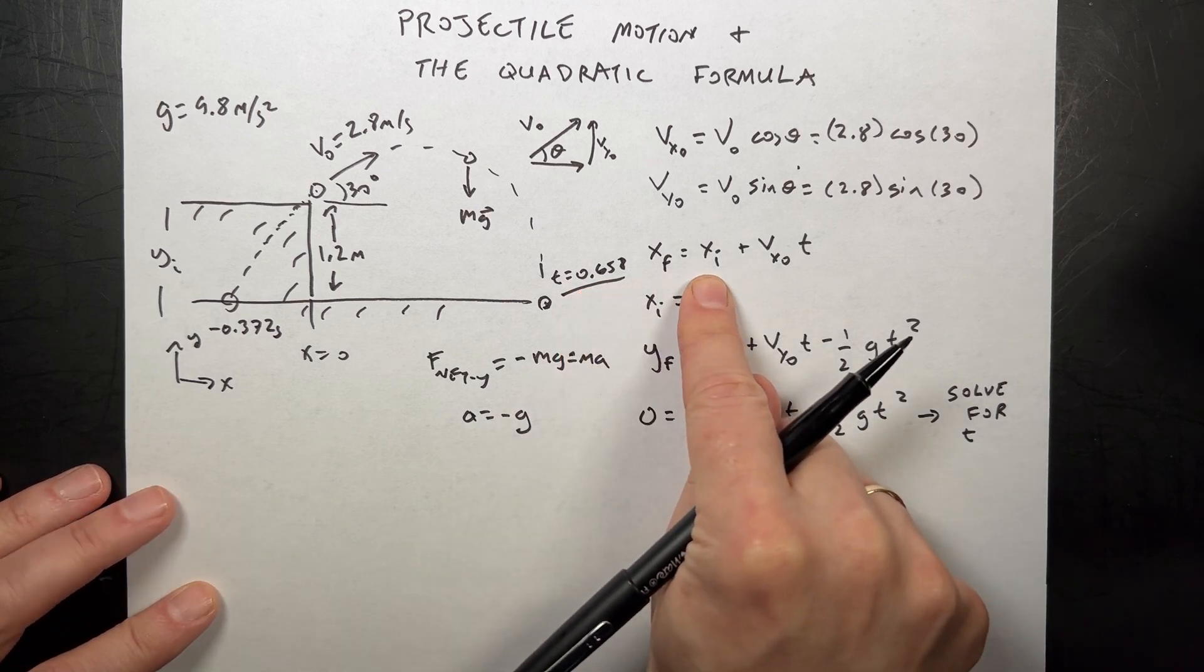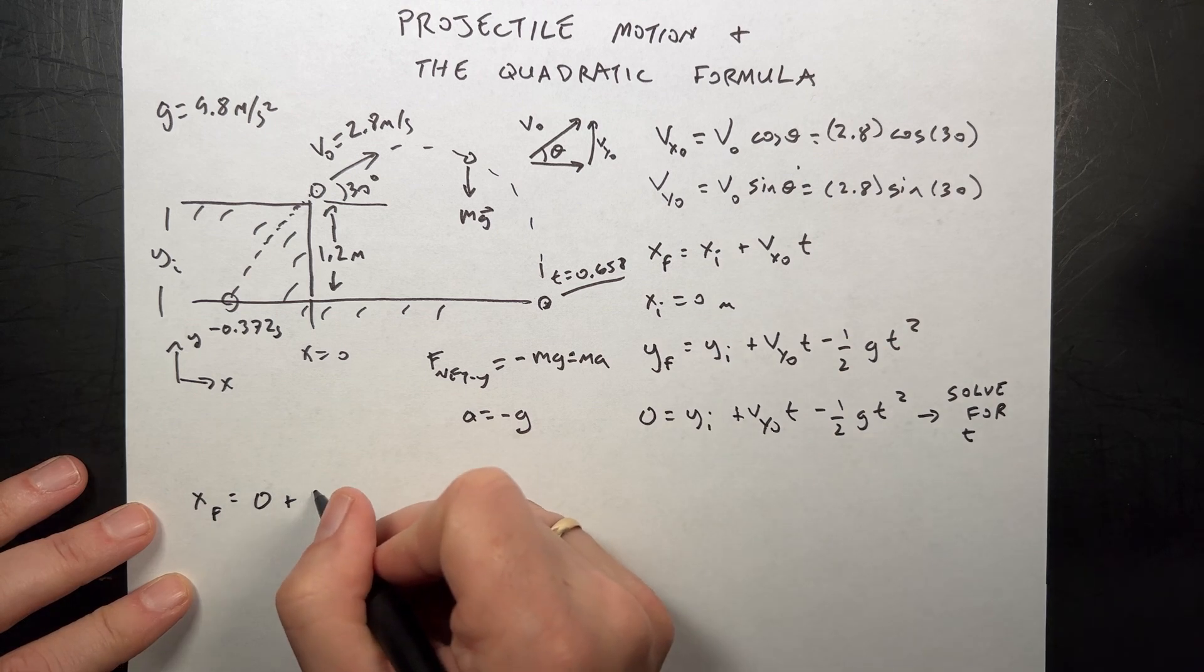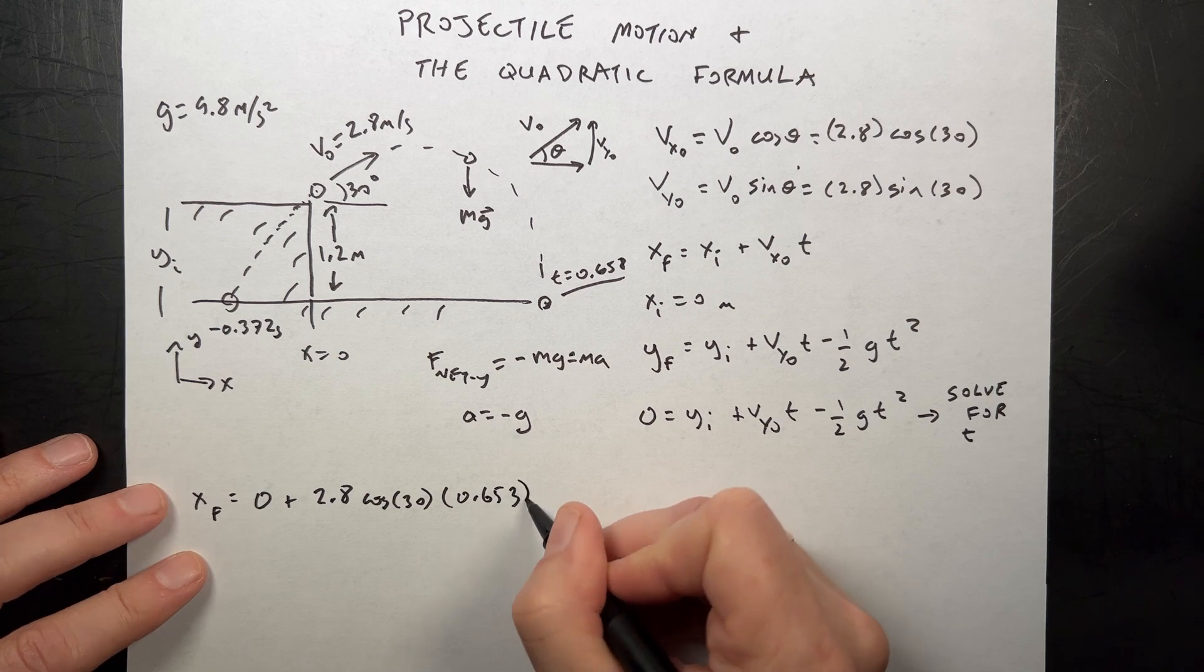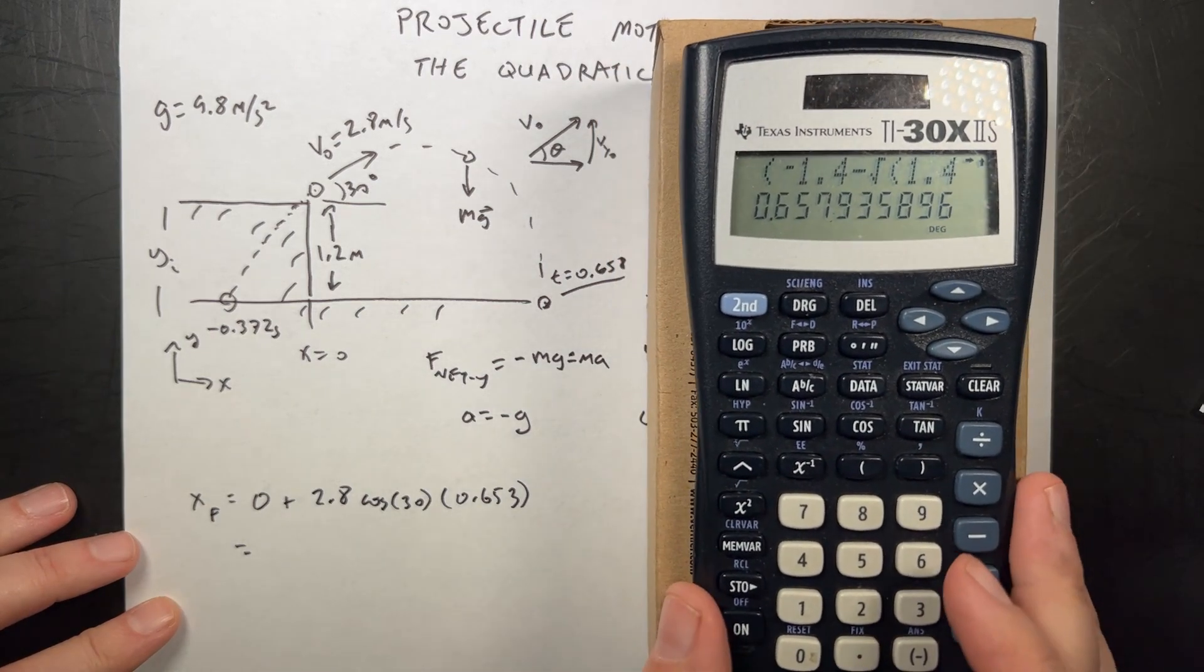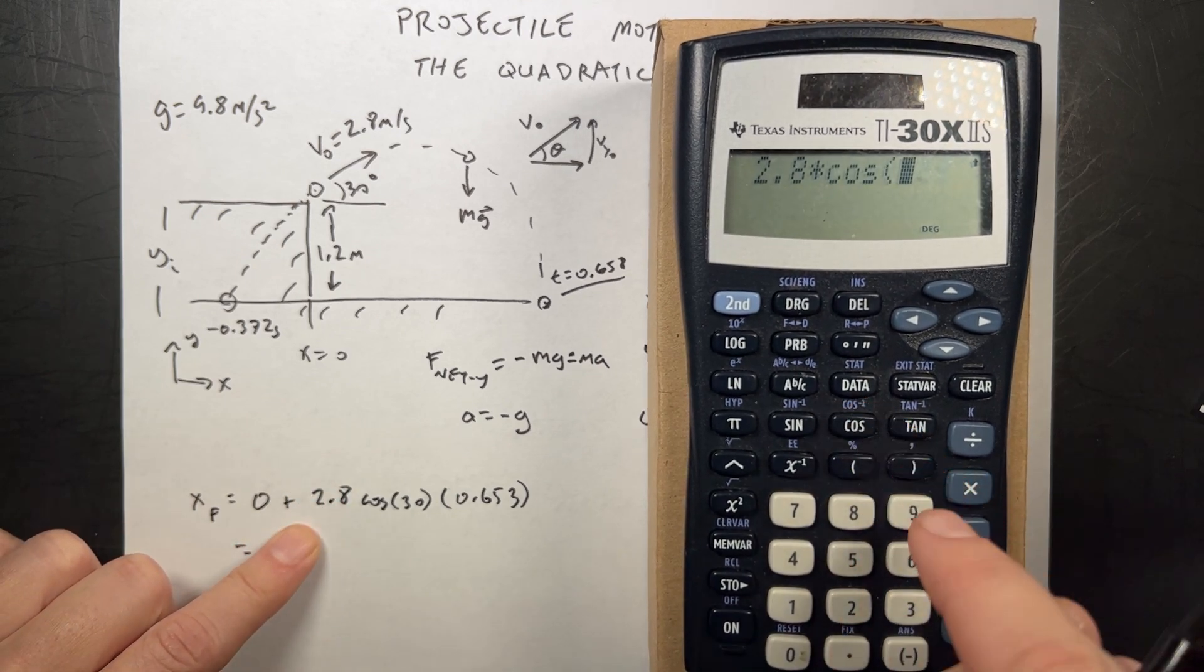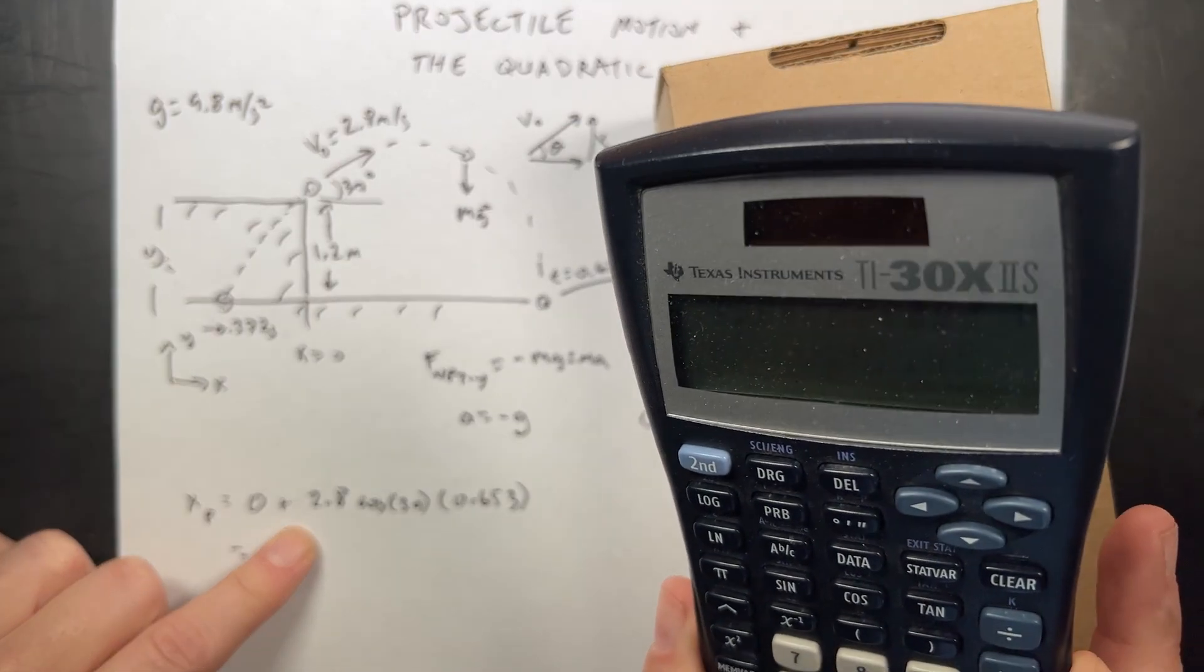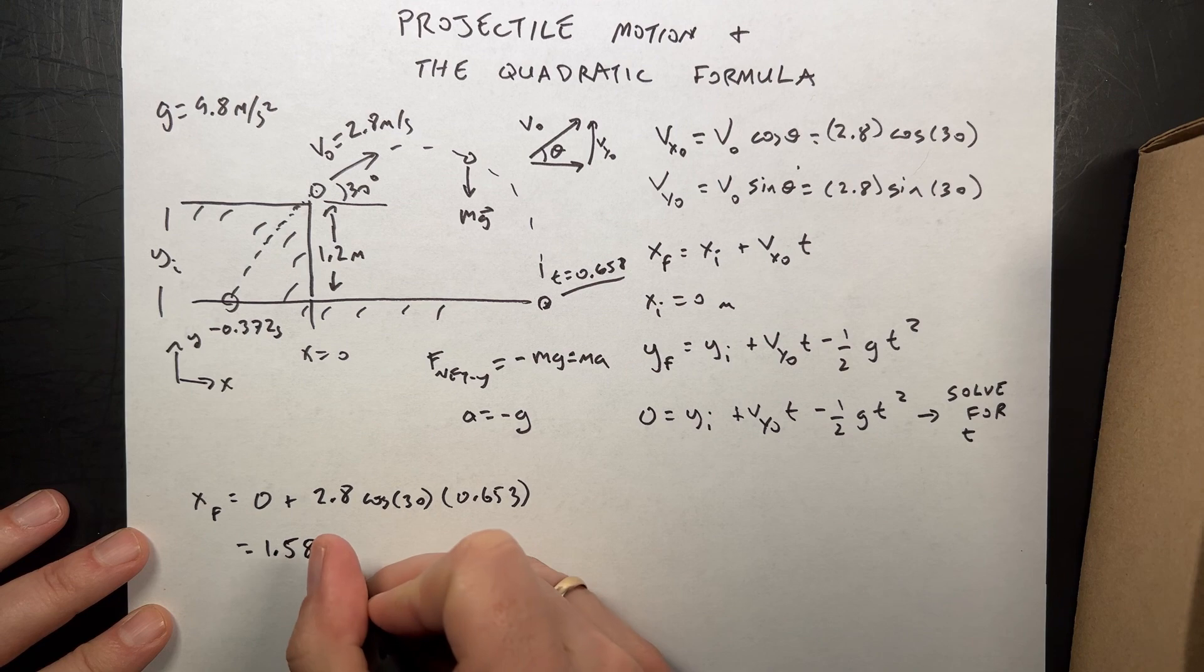Now I have that time, I can plug it in and find my final x. X final equals zero plus the initial x velocity, 2.8 times cosine of 30, times my time of 0.658. Let's put that in the calculator. I get 2.8 times cosine 30 times 0.658, enter. I get 1.583 meters.